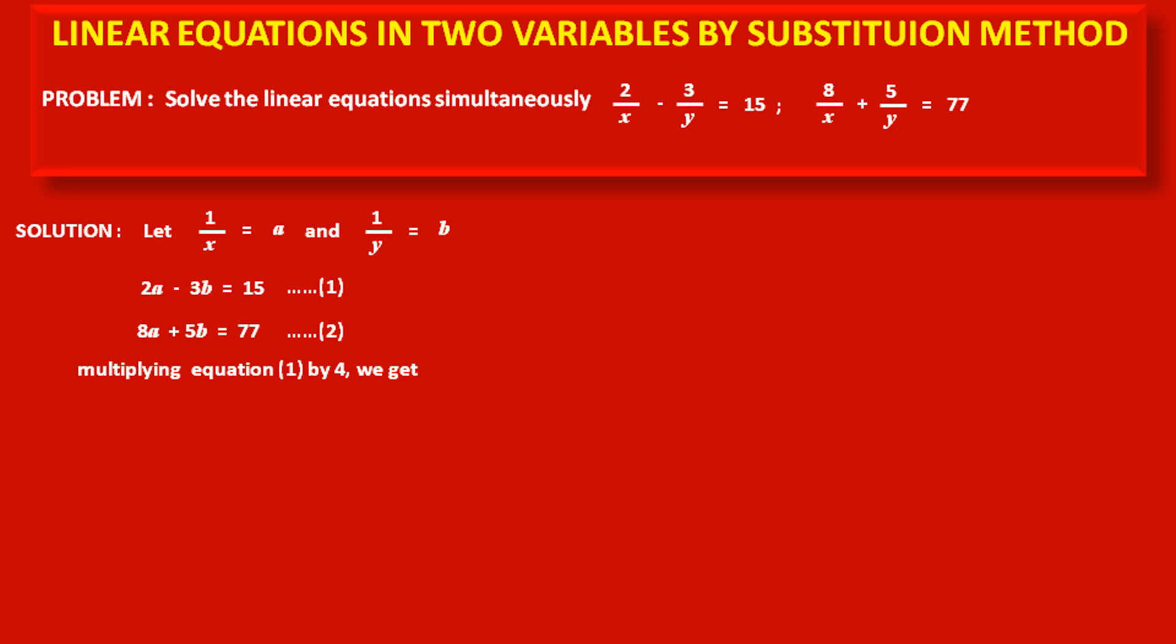Multiplying equation (1) by 4, we get 8a - 12b = 60. This is equation (3).